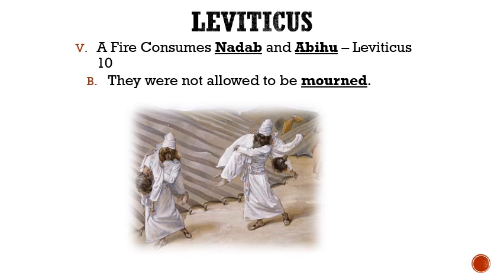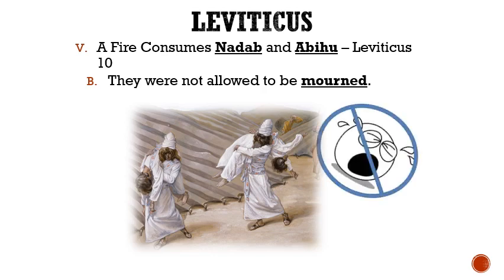Letter B: They were not allowed to be mourned. After Nadab and Abihu died, Moses made their cousins carry the dead bodies out of the tabernacle. Then Aaron and his other sons were told not to mourn for their loss at all, or they would die as well.